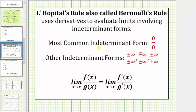The most common indeterminate form is zero divided by zero. However, if a limit is in any of the indeterminate forms listed here, L'Hopital's rule does apply, which states the limit as x approaches c of f(x) divided by g(x) equals the limit as x approaches c of f′(x) divided by g′(x).